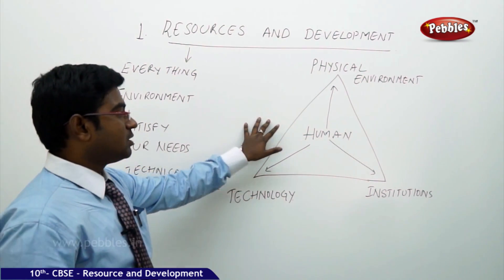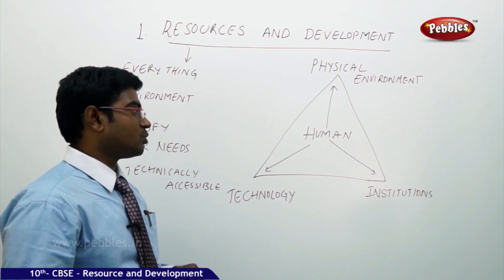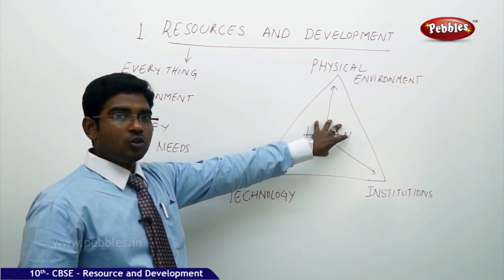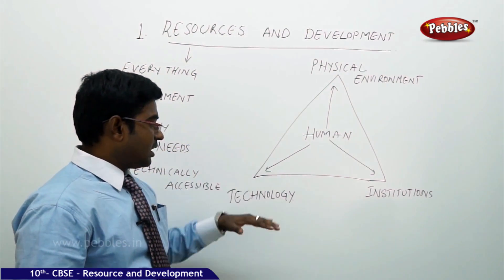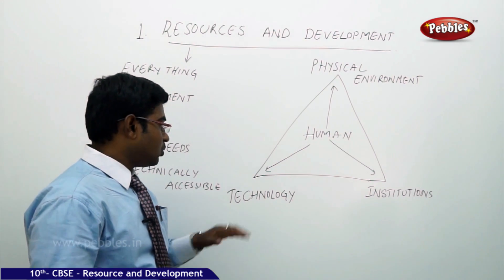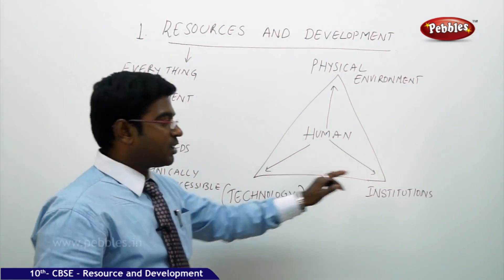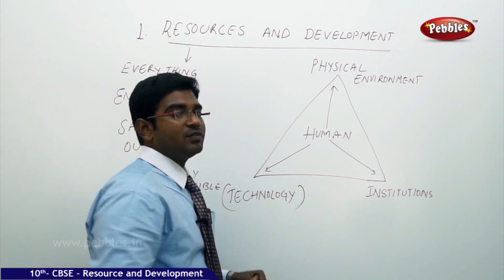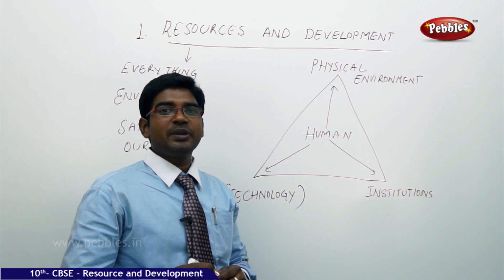Let us look at this triangle, which will help you understand what a resource is. A resource is a thing which is under human control, available in the physical environment. At the same time, if we have the technical knowledge to make it available for us, then we can use institutions to develop the resources. This triangle explains the exact meaning of resource.